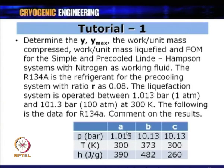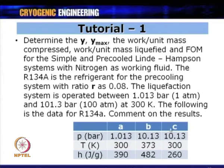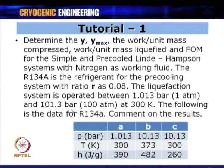The data for R134A is given at points A, B, and C. Point A is at the entrance to the refrigeration compressor at 1 bar; point B is after compression at 10.13 bar (pressure ratio of 10); point C is after the condenser. Corresponding temperatures and enthalpies are provided. It is important to understand what is given and what is asked.